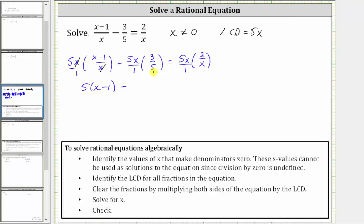And then we have minus, notice here we have a common factor of five between the numerator and denominator. Five divided by five simplifies to one, leaving us with x times three, or three x.